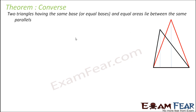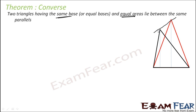The converse is also actually true, as we have seen in the cardboard example. So if there are two triangles and they have the same base and they have the same area, then they must lie between the same parallels. So let us draw this — this line has to be parallel to the base in this case.